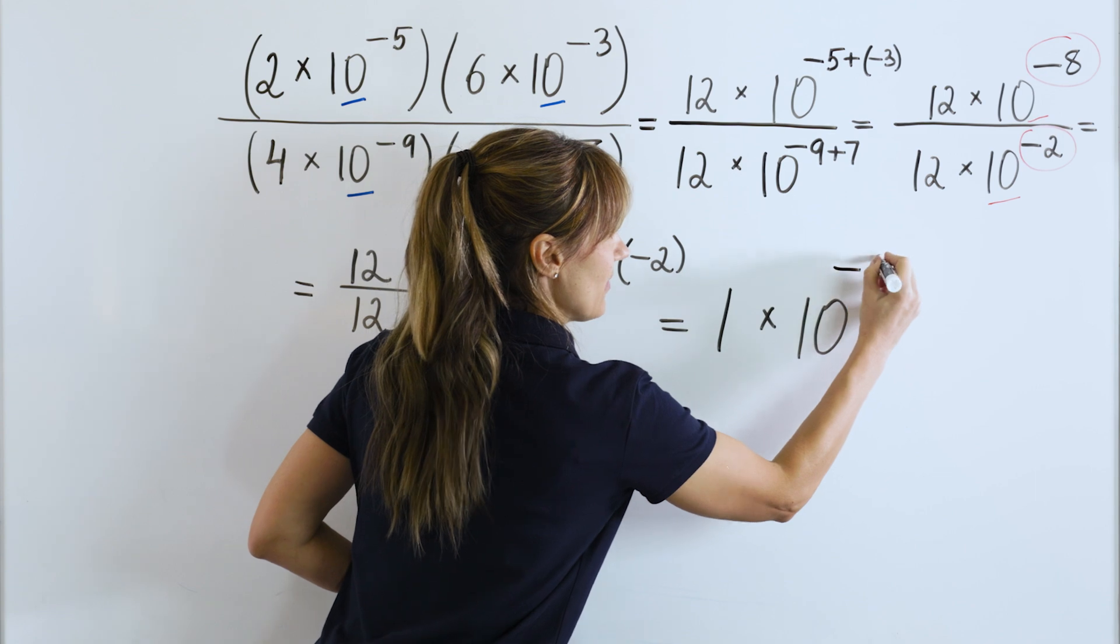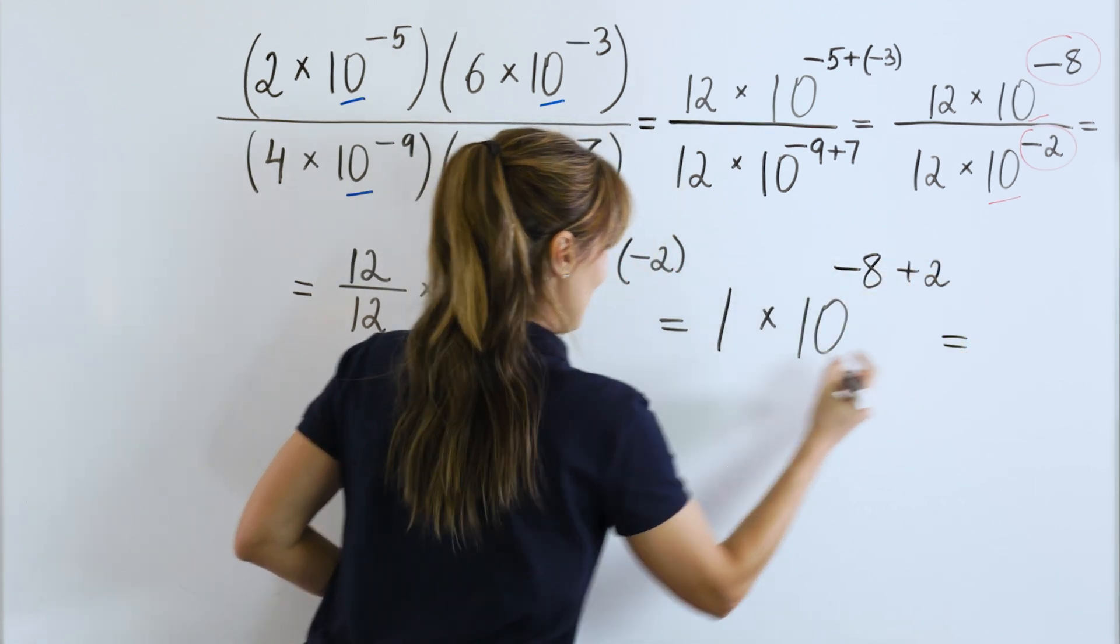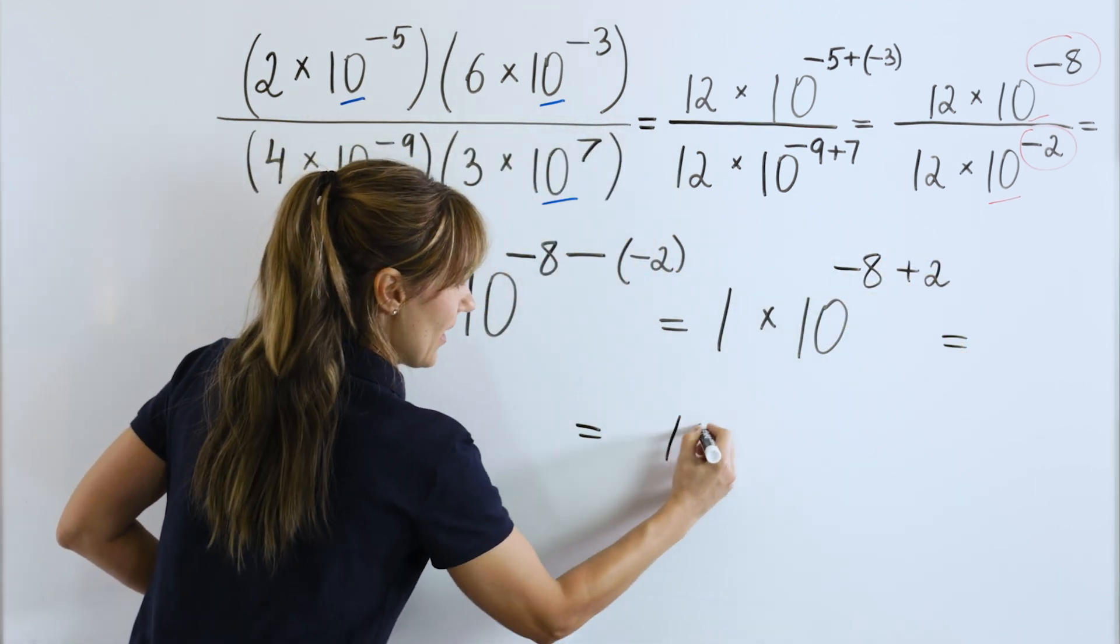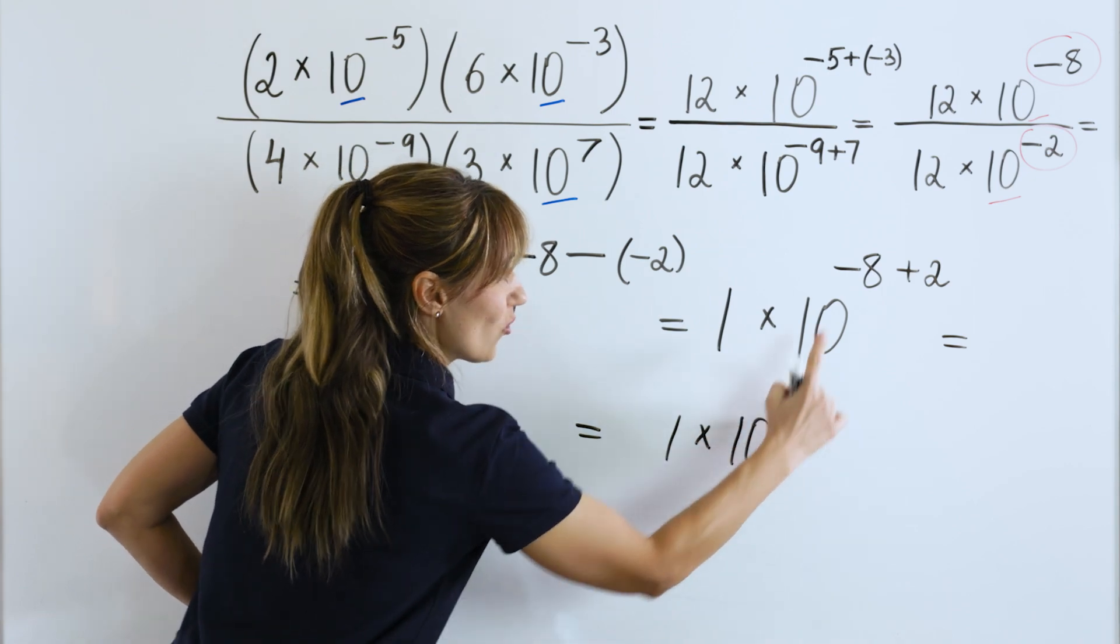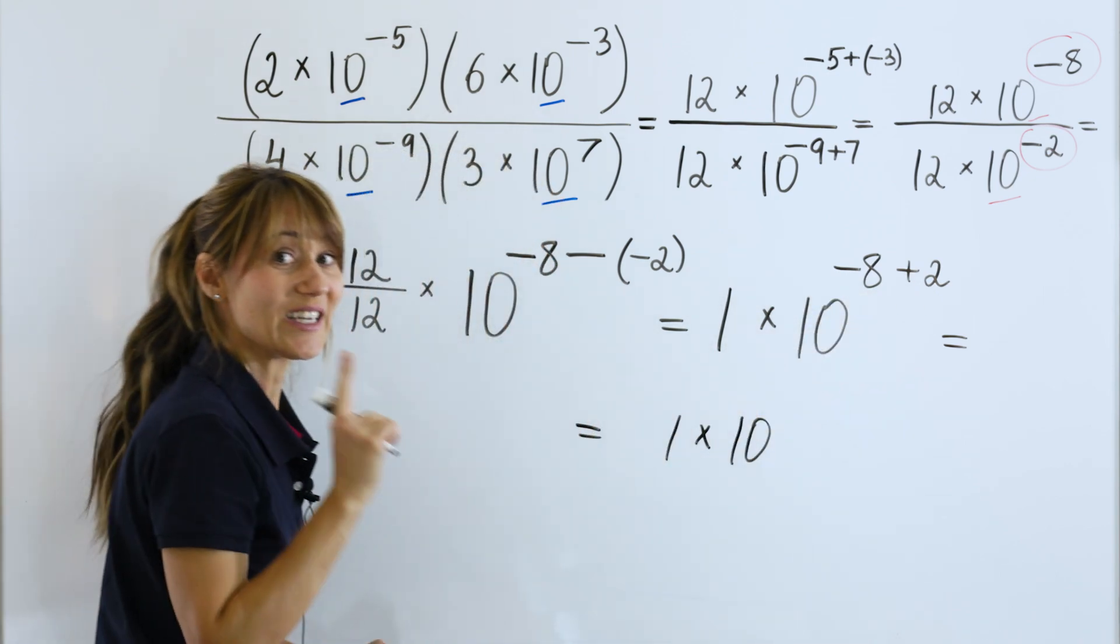We will have 1 times 10 to what power? Negative 8 plus 2 is negative 6.